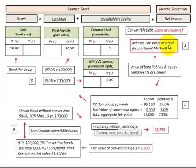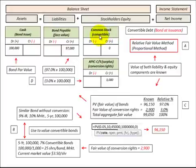Here we're going to look at the relative fair value method, or proportional method, for convertible debt or convertible bonds. The first example we're going to do is where we have these convertible bonds and we swap them into common stock, and then the second example would be where we've retired these convertible bonds through a cash purchase.